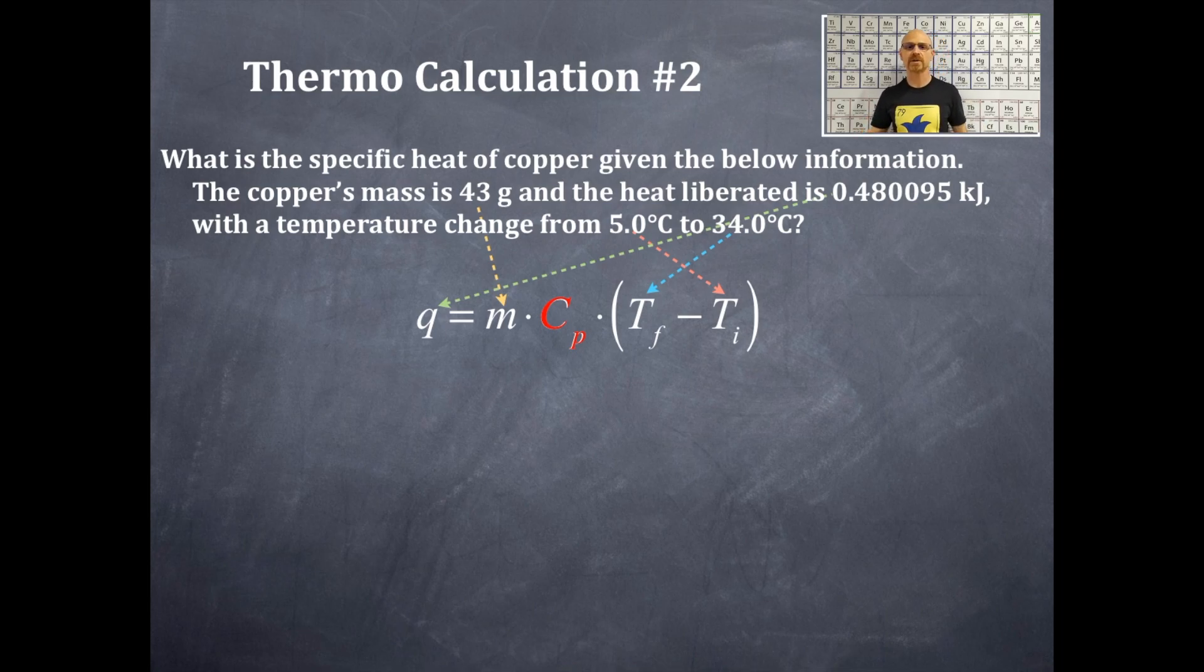The first thing that we're going to do is we're going to take the heat term and that is the kilojoule term and convert that into joules and that's what we're doing right here. We're going to take those kilojoules and divide by one kilojoule times a thousand joules and that will give me the joules that I have. So the joules that I have is 480.095 joules now.